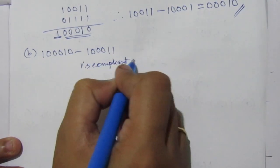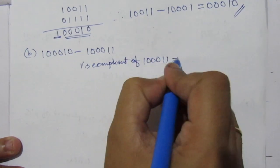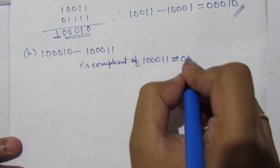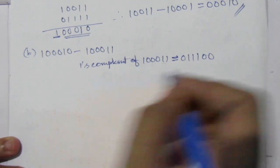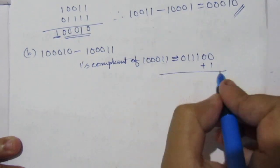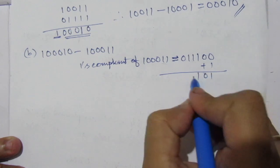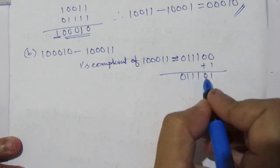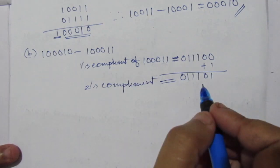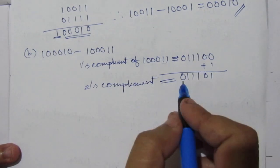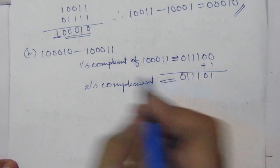The 1's complement of 100011 equals 011100. This is the 1's complement. Add 1, then we find the 2's complement: 011101. So this is the 2's complement. Now we have to add this 2's complement of the subtrahend to the minuend.